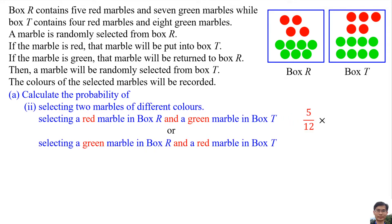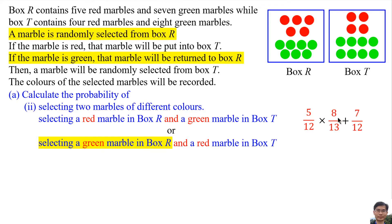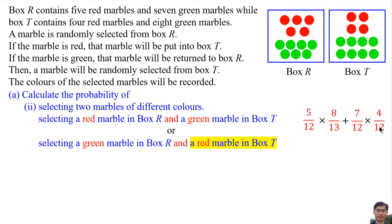Multiply: the probability of selecting a green marble from Box T is 8 over 13, because there are 8 green marbles and the total in Box T is 13. The second possibility: the probability of selecting a green marble from Box R is 7 over 12. Multiply: the probability of selecting a red marble from Box T is 4 over 12, since there are 4 red marbles and total is 12. Adding both possibilities gives a probability of 211 over 468.